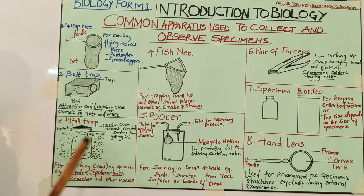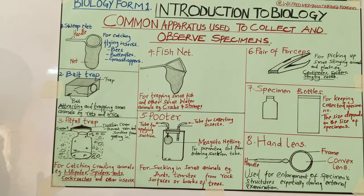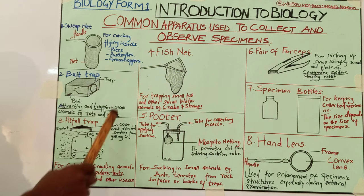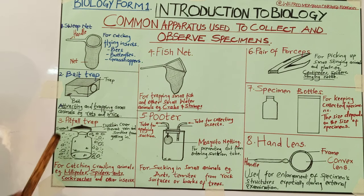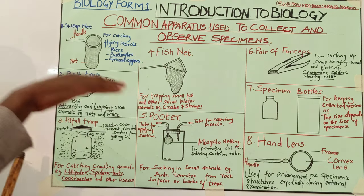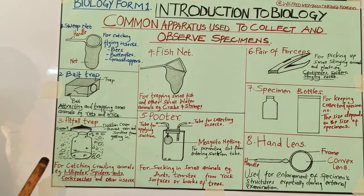The function of the dustbin cover is to prevent rain and sunshine from getting in. Maybe you have left the pitfall trap and you are waiting for specimens to enter. If rain comes and water flows into the apparatus, it will be difficult for the specimens to be collected. Too much sunshine may also kill the specimens.